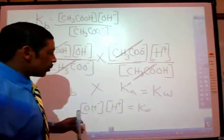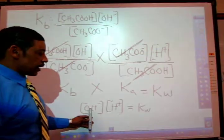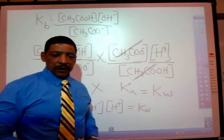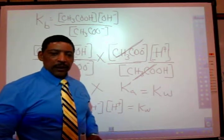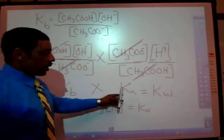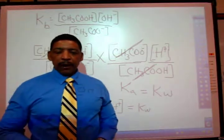And as we very well know, when we multiply our concentration of hydroxide times our concentration of hydrogen ion, we get Kw. In other words, Kb times Ka is equal to Kw.